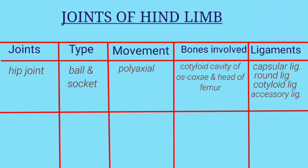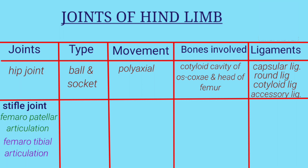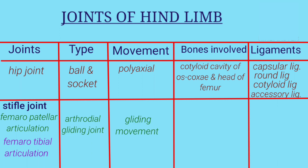Fourth is the stifle joint, in which three types of articulation are present. First is femoropatellar articulation, second is femorotibial articulation, and third is tibiofibular articulation. In femoropatellar articulation, the type of joint is arthrodial gliding joint, movement is gliding movement, and bones involved are the trochlea of the femur and articular surface of the patella.